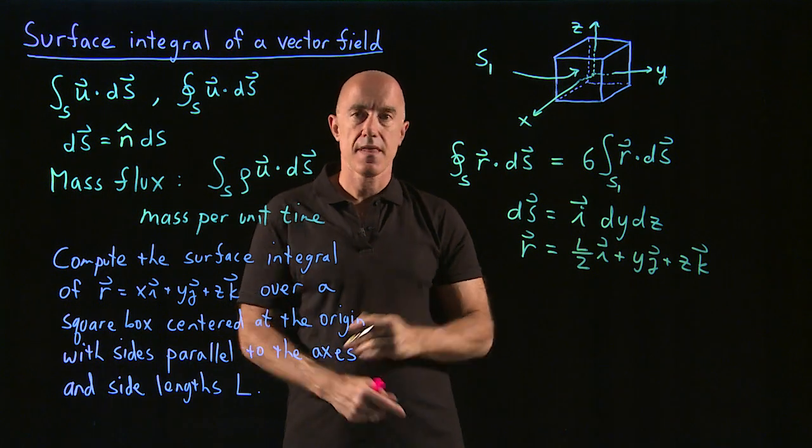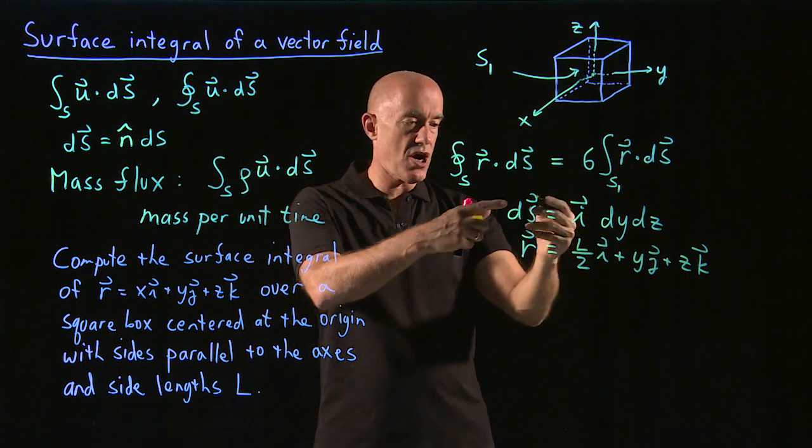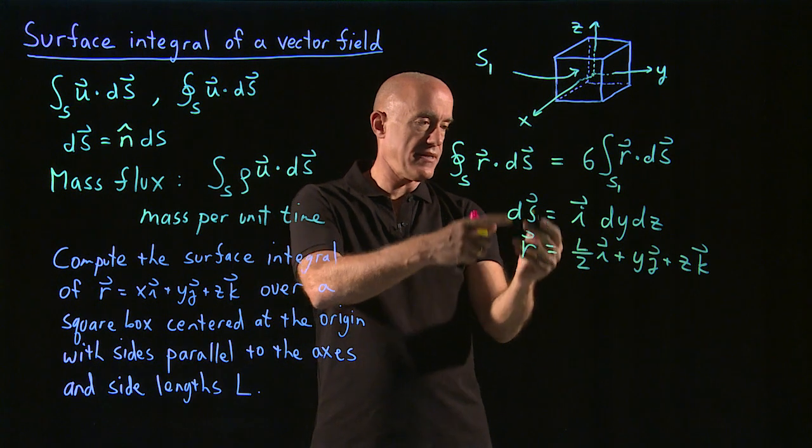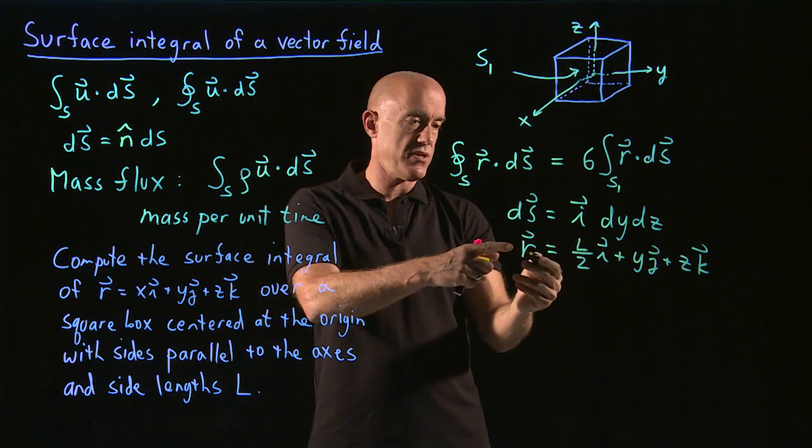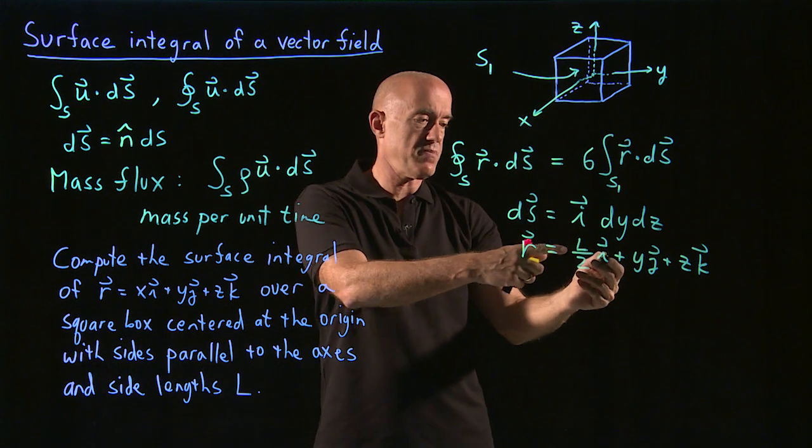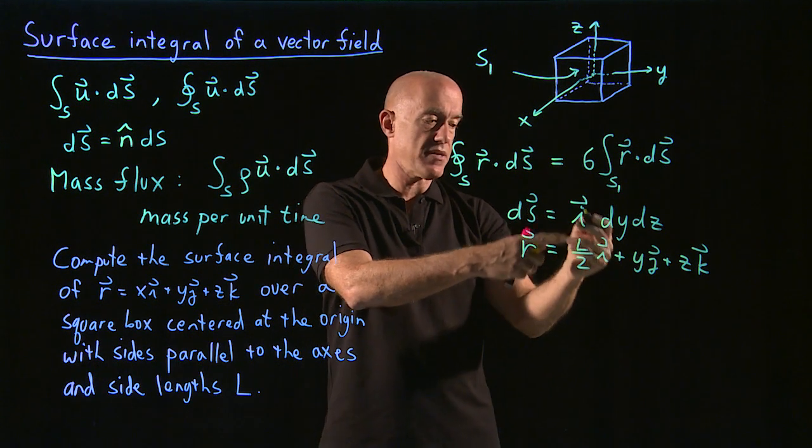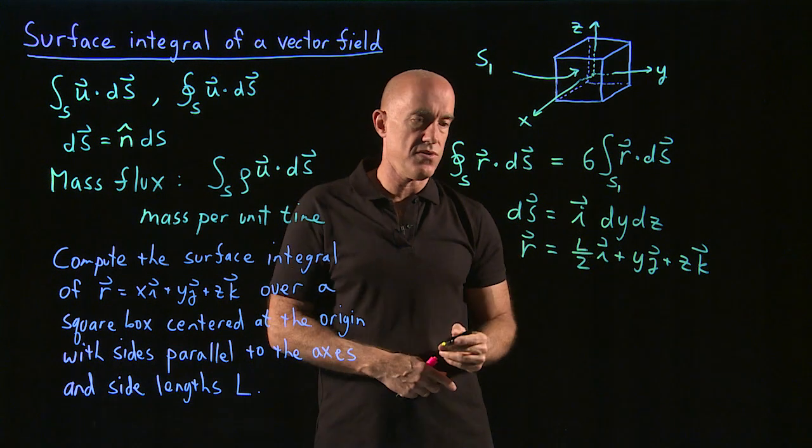So y times j plus z times k. Now this integral is r dot ds. So r dot ds, because ds is only in the i direction, r dot ds just picks out the i component of r, which is L over 2.